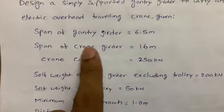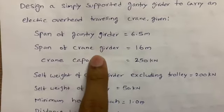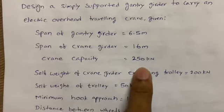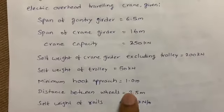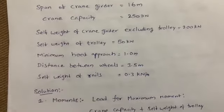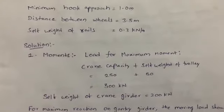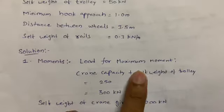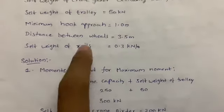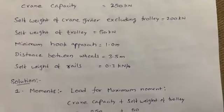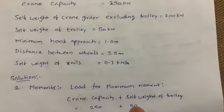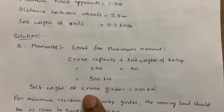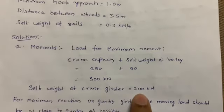In the given question, the span of the gantry girder is 6.5 meters. The span of the crane girder is 16 meters and crane capacity is 250 kilonewtons. First we need to calculate the load for maximum moment: crane capacity is 250 kN plus self-weight of trolley 50 kN gives 300 kN total. The self-weight of the crane girder is 200 kN, as given.